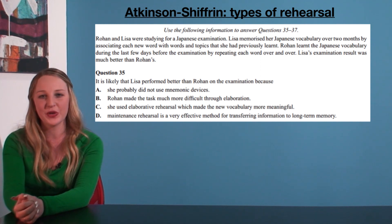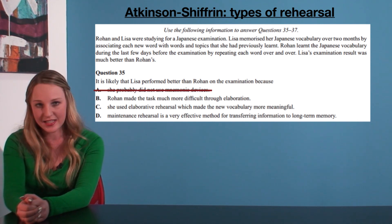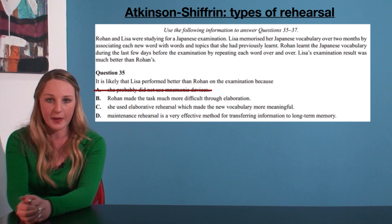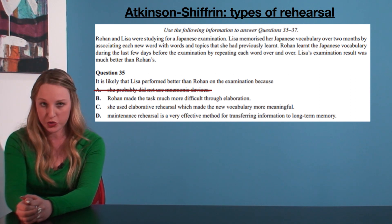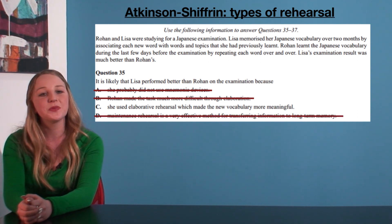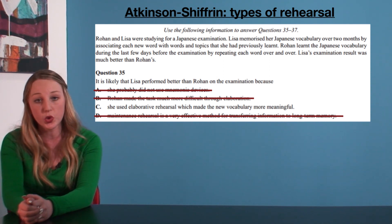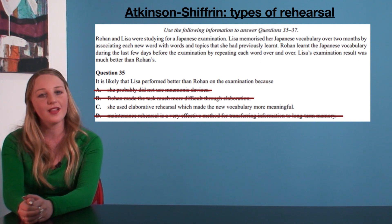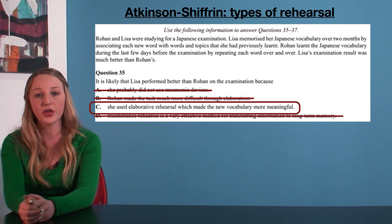Or D) maintenance rehearsal is a very effective method for transferring information to long-term memory. We know that option A is not the correct response, because Lisa possibly did use mnemonic devices — she linked the new information to information she already had in long-term memory by associating the new words with old topics. Option B is also incorrect because Rowan did not use elaborative techniques. Option D is incorrect because although maintenance rehearsal is a good technique to keep information in short-term memory, it is not a very effective technique for encoding information into long-term memory. That leaves the correct response: option C — Lisa used elaborative rehearsal which made the new vocabulary more meaningful.